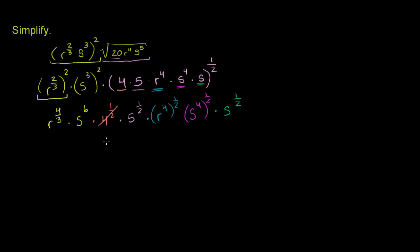So 4 to the 1/2 is the same thing as 2 — we're taking the principal root of 4. 5 to the 1/2, well we can't simplify that, so let's just write that as the square root of 5. r to the 4th to the 1/2: 4 times 1/2 is 2, so this is r squared — or equivalently, the square root of r to the 4th is r squared. Similarly, s to the 4th to the 1/2 is also s squared. And then s to the 1/2 we write as the square root of s.